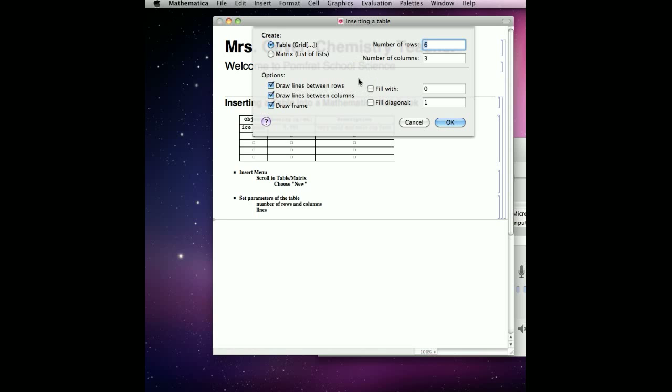A window will appear in which you can define the parameters of your table, such as number of columns, number of rows, and borders. I will create a table with four columns and four rows.